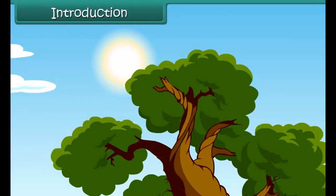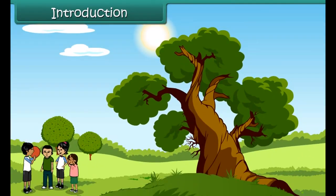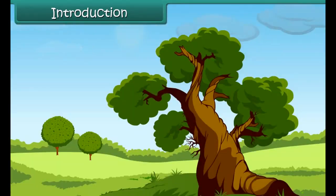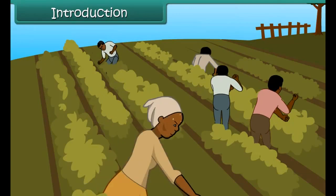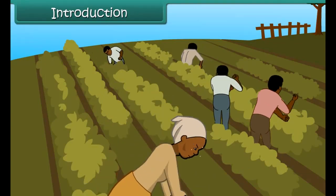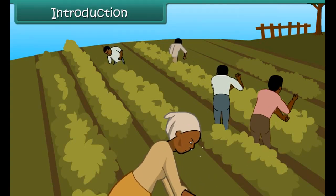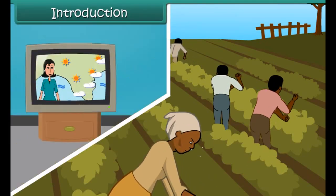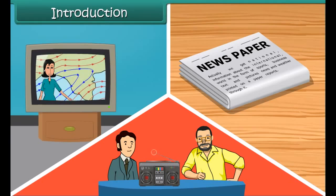A bright sunny day makes us happy, but when it is too hot we are happier to see clouds and rain. Our harvests depend on the type of climate we have during a period. Weather is so important that there are daily forecasts about it on the television, radio, and in the newspapers. Let us learn about weather and climate.